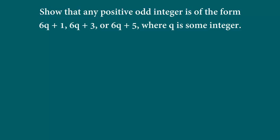Show that any positive odd integer is of the form 6q plus 1, 6q plus 3, or 6q plus 5, where q is some integer. Now I'll be the first person to admit it is very hard to draw a connection between these types of questions and Euclid's division lemma.